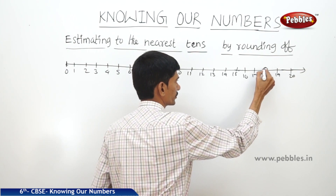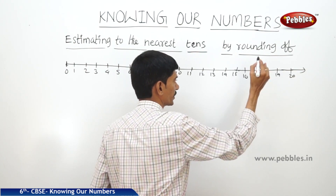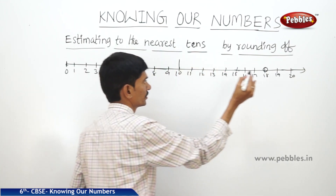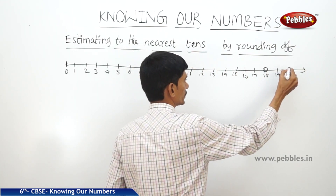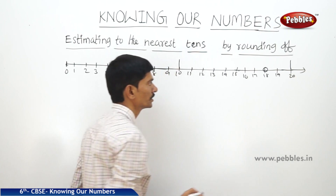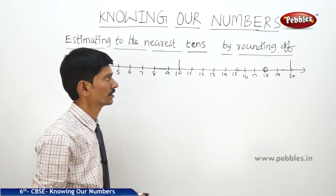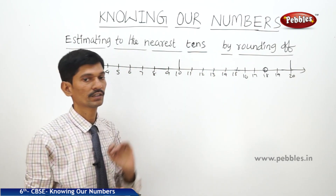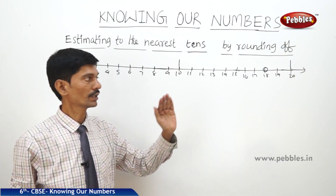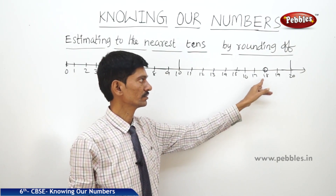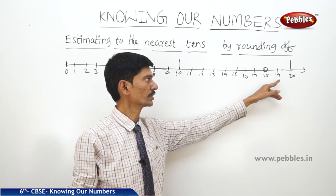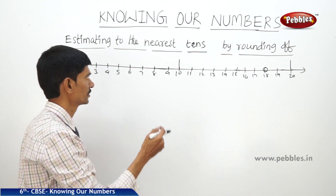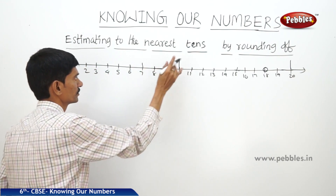Now if you consider the number 18, so it lies between 10 and 20, but it is nearer to 20 than to 10. So then we can approximate 18 as 20 by rounding it off. And if you consider 7,